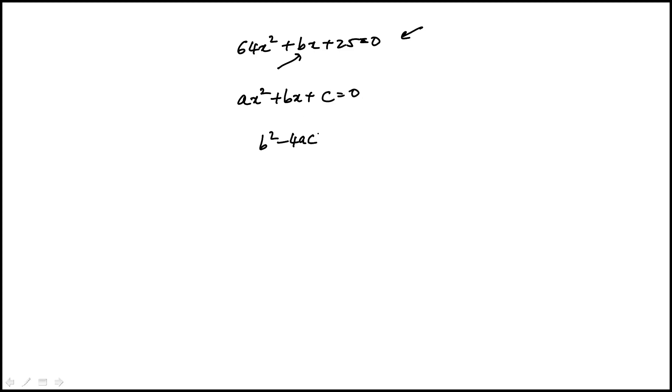If B squared minus 4ac is greater than 0 then we'll have two distinct real solutions. So that's the condition we will apply here. B is B and then A is 64 and then C is 25.